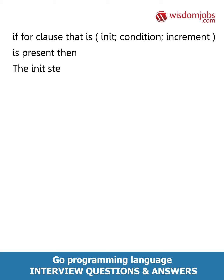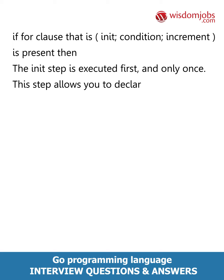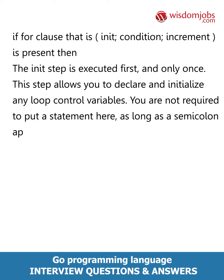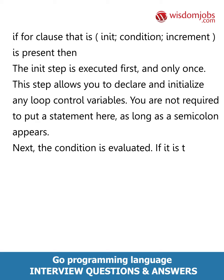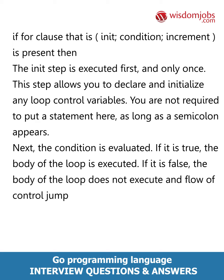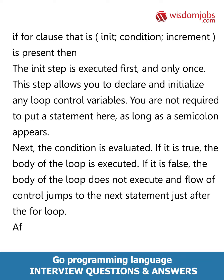then the initial step is executed first and only once. This step allows you to declare and initialize any loop control variables. You are not required to put a statement here as long as a semicolon appears. Next, the condition is evaluated — if it is true, the body of the loop is executed; if it is false, the body of the loop does not execute and flow of control jumps to the next statement just after the for loop.